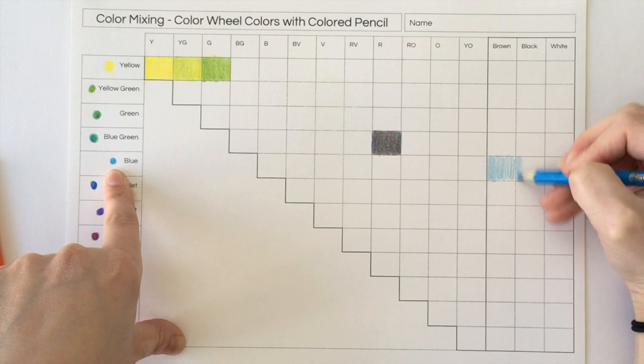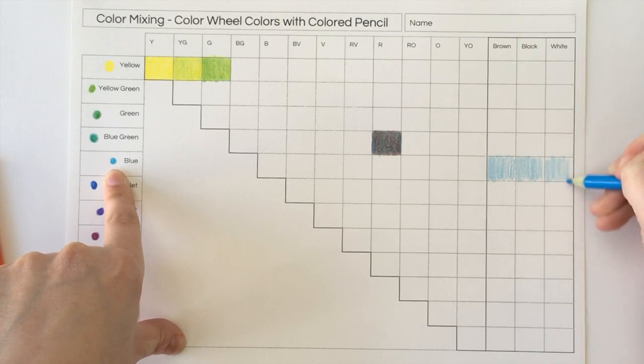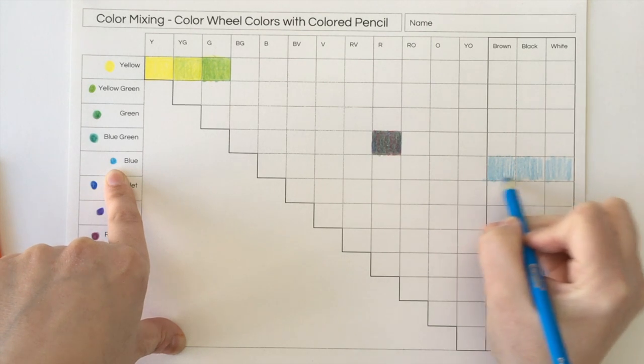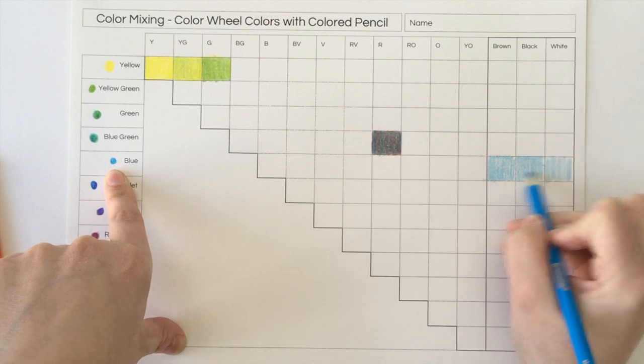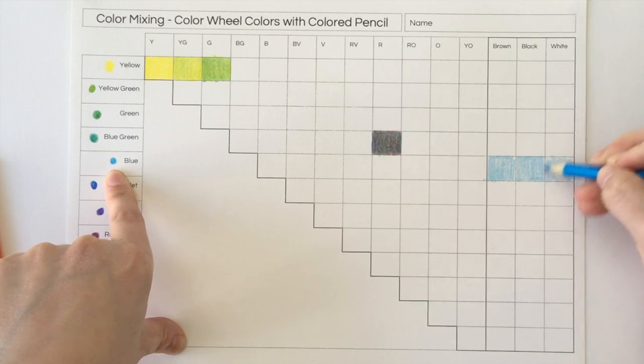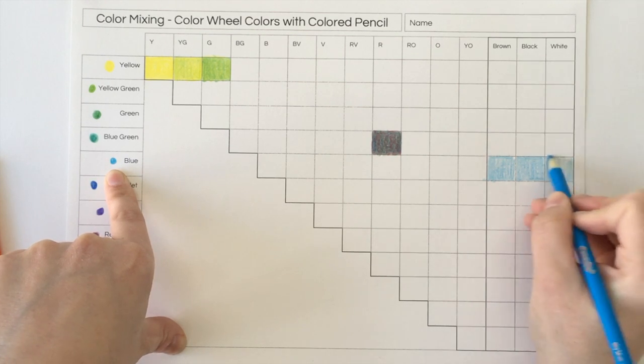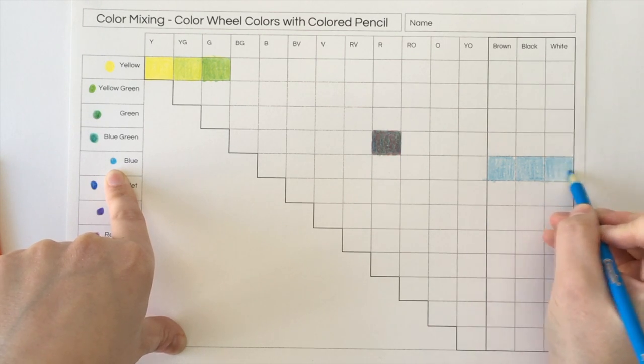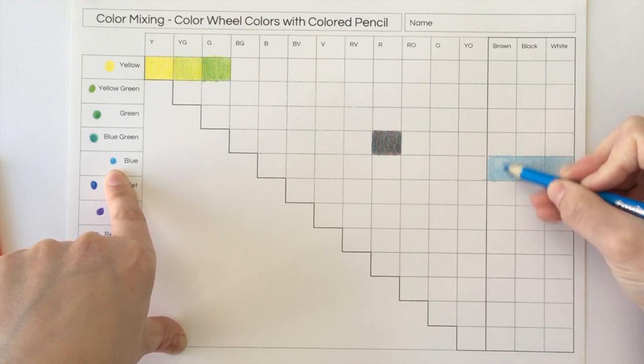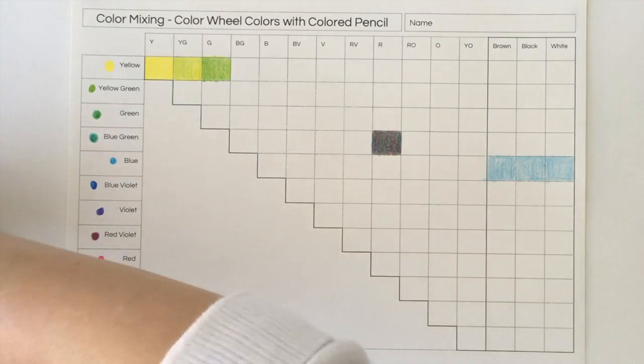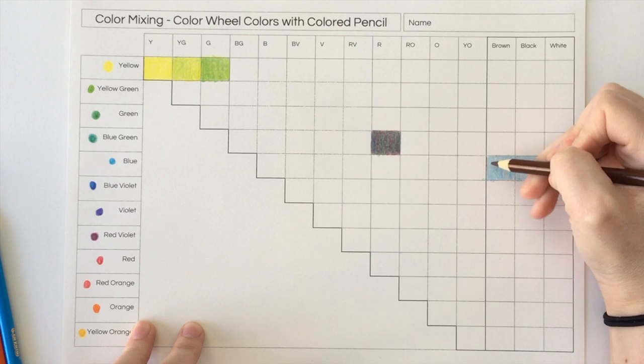So for blue, I'll do blue. I'm just going to go ahead and color all three so you can see what it looks like. I'm going to add a little bit of brown.